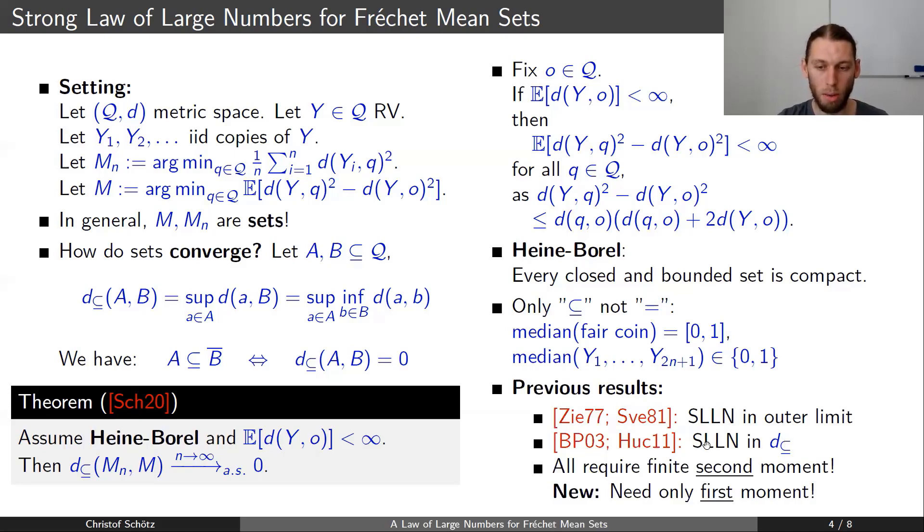But all of those require a second moment, requiring a square here, and we only require here a 1. So no square, and this is a major new thing here in this theorem.